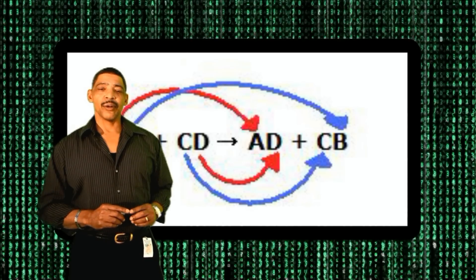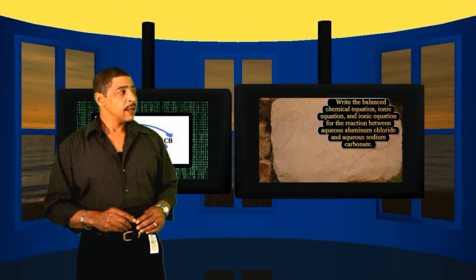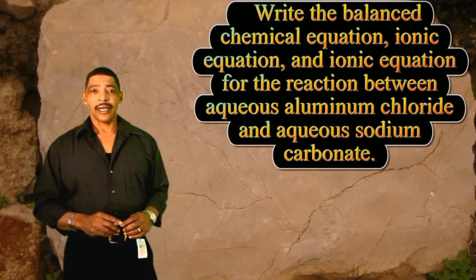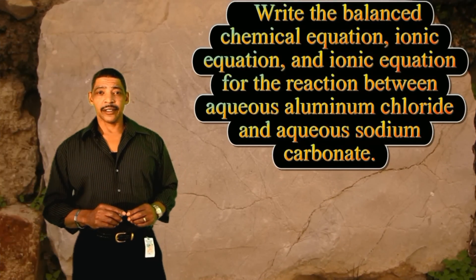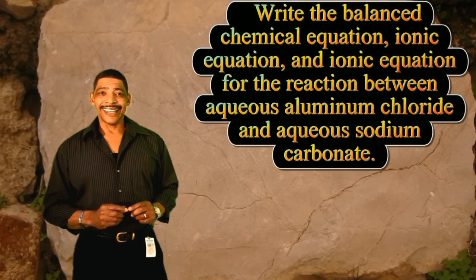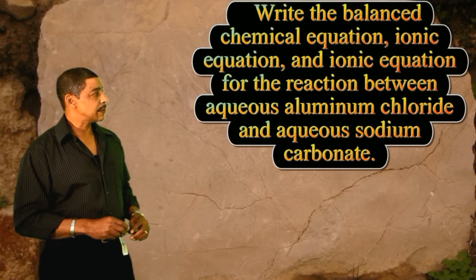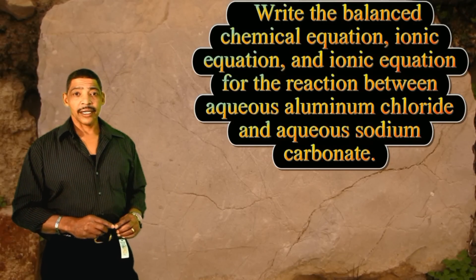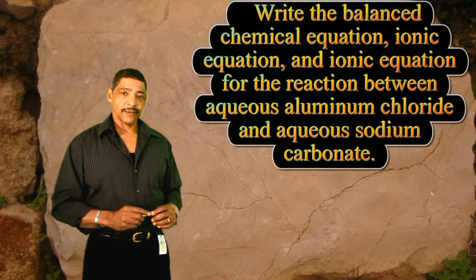Double replacement reactions that lead to the formation of a solid product are called precipitation reactions. Consider the following example where we are asked to write the balanced chemical equation, the ionic equation, and the net ionic equation for the reaction between aqueous aluminum chloride and aqueous sodium carbonate.